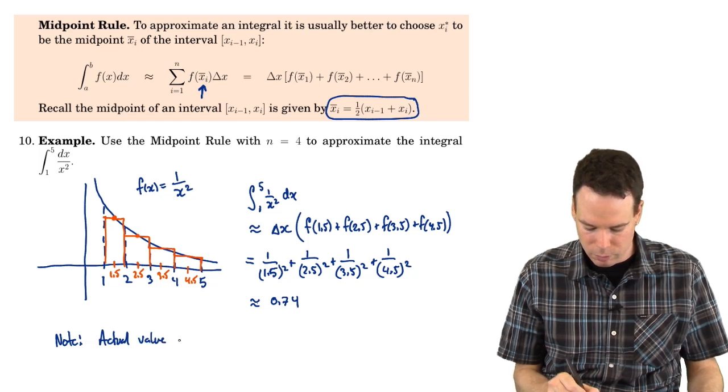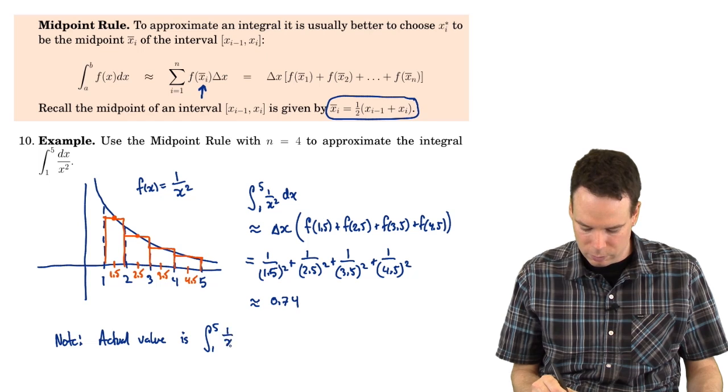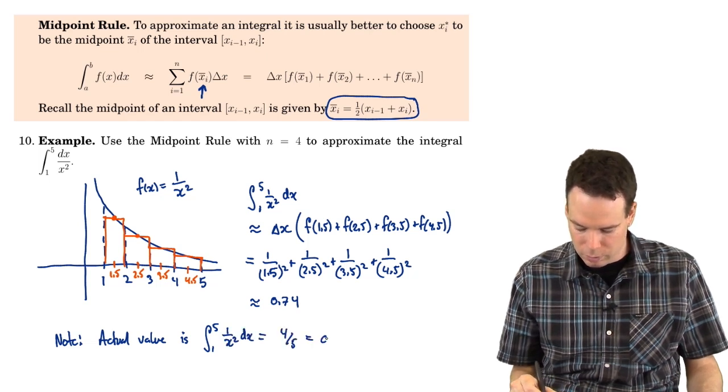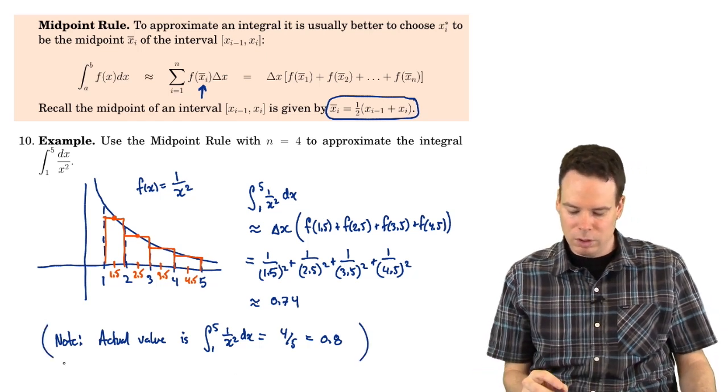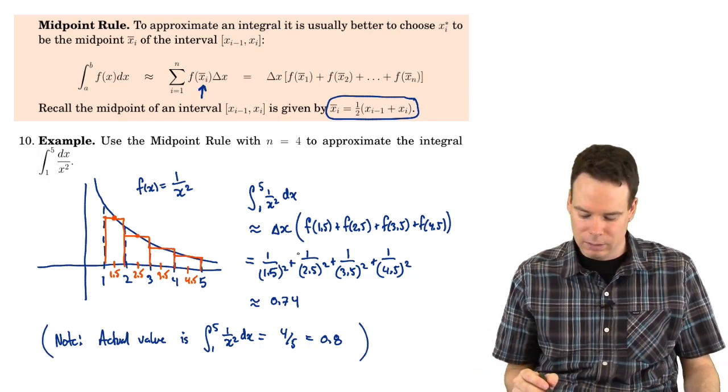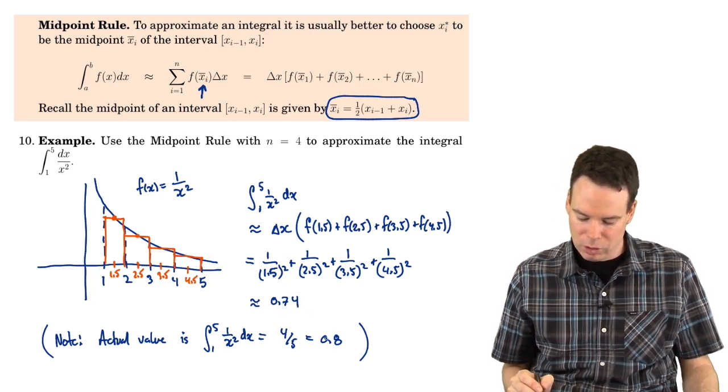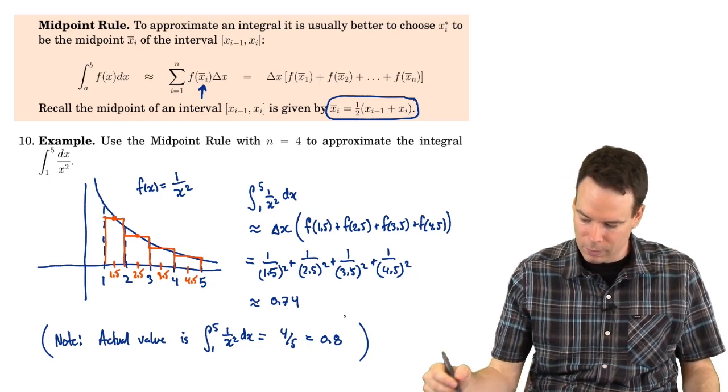The actual value is, so that's the actual value of this integral, is equal to 4 fifths, or in other words 0.8. And so our approximation of using just n slices and the midpoints, we got 0.74. That's pretty good. That's a pretty good approximation. I mean we're off by 6 one-hundredths. Not so bad.